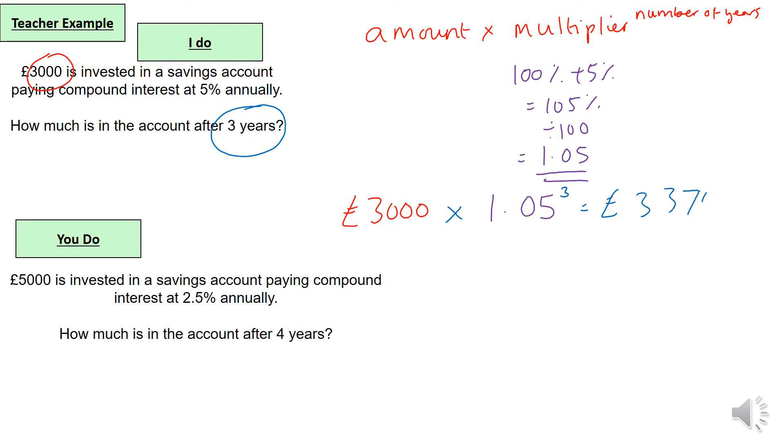Now because we're talking money, we need to round to two decimal places, so it will be three thousand three hundred and seventy four point five nine. Have a go at the second question and pause the video.